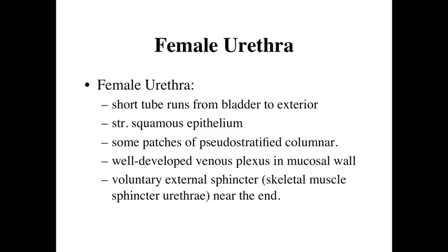The urethra is going to be the tube that runs from the bladder to the exterior for voiding the bladder — essentially emptying it, removing and excreting the urine from the body. It's going to be lined by a stratified squamous epithelium, although in some patches you may find a pseudostratified columnar epithelium, which may be associated with pathologies or at least damage to the epithelial lining. There is a well-developed venous plexus within the mucosal wall of the female urethra, and external towards the tip of the urethra is going to be a voluntary external sphincter — a skeletal muscle sphincter — allowing for volitional control to prevent urine from leaking out of the urethra.